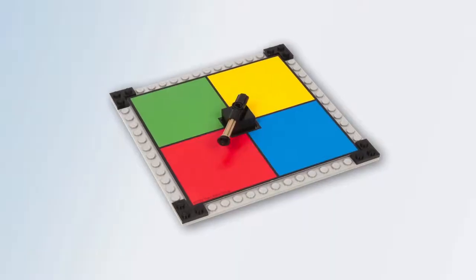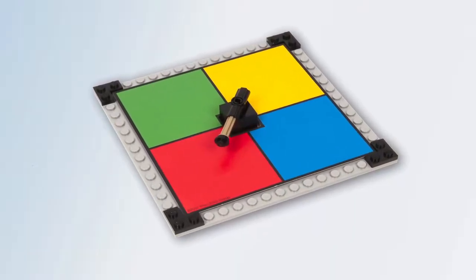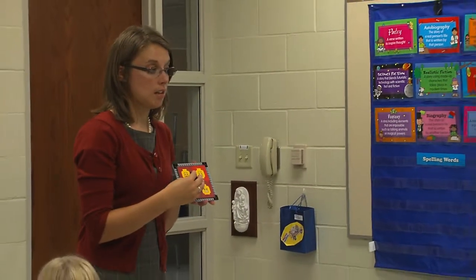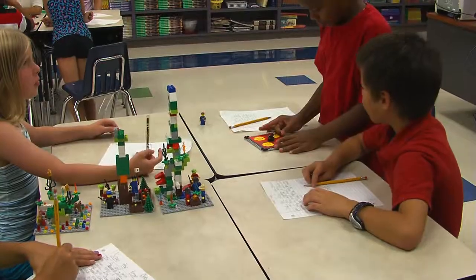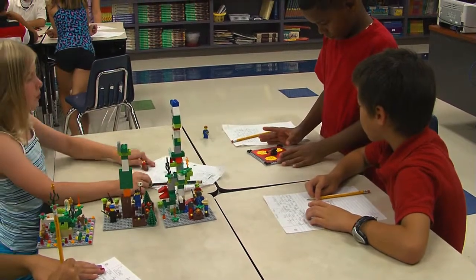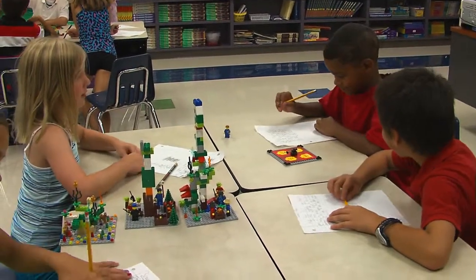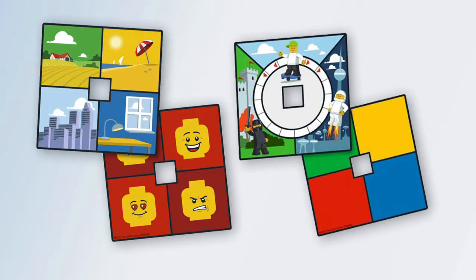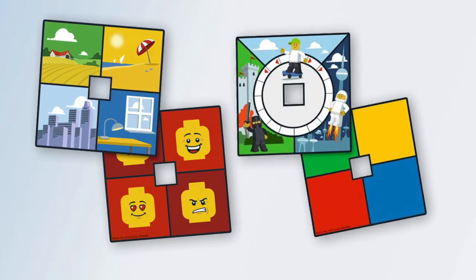One of the unique components of the Story Starter set is the spinner element. This is a gaming device that can be used to help students who are creatively stuck and cannot decide which direction to take their story, or to inject variation and chance into the story making process. Included are two double-sided cards, each containing a different motive that will affect the story's outcome.